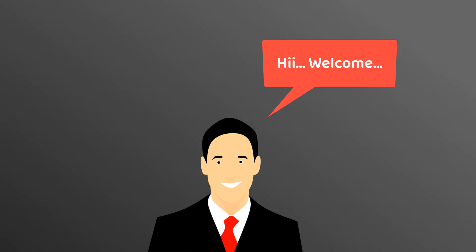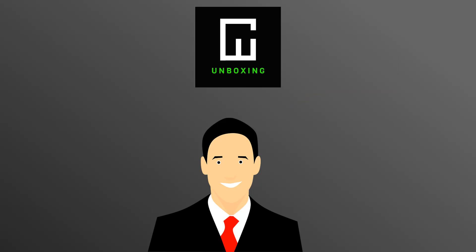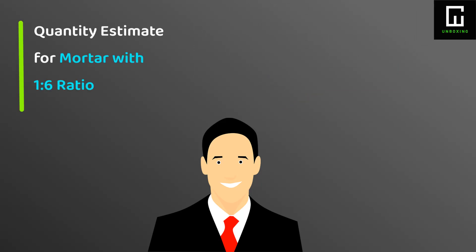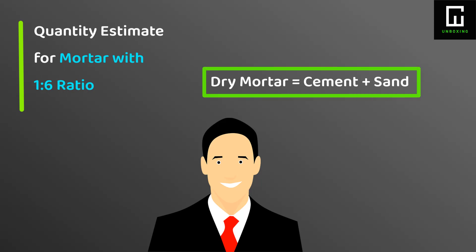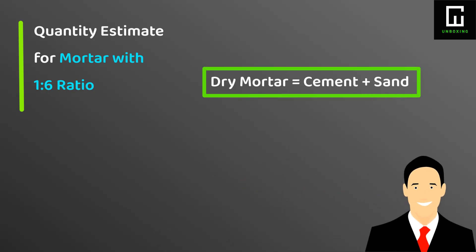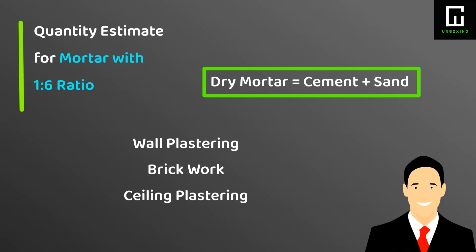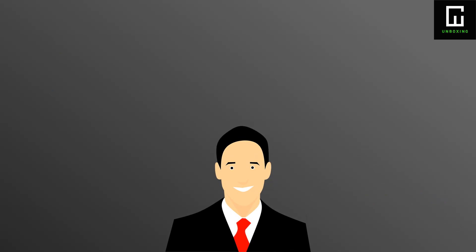In this video I will show you the step-by-step process of calculation of cement and sand quantity for mortar. As we know, at the very first stage in a construction field we have to estimate the quantity of cement and sand for mortar mixing. Mortar is normally used for wall plastering, brickwork, ceiling plastering, and many other regular construction jobs. We have to follow just a simple process of ratio and proportion for calculating the exact quantity of mortar.